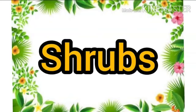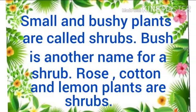Now the next is shrubs. Small and bushy plants are called shrubs. Bush is another name for a shrub. Rose, cotton, and lemon plants are shrubs. Shrubs are small and thick plants. Bushy means thick. They have many low branches. We can also call them bush. Examples are rose, cotton, lemon, etc.